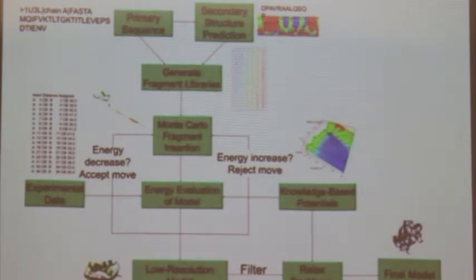We score according to the Rosetta knowledge-based potentials, where you can input experimental data. It's also based on just statistics from the PDB. And then, if your fragment insertion results in a lowering of Rosetta score or energy, then you keep that fragment insertion. And you do this thousands and thousands of times until you come up with a fairly decent, what Rosetta considers to be a fairly decent low-resolution model.